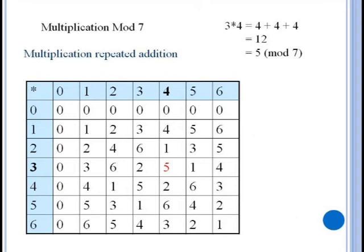And of course multiplication is repeated addition so either append multiple times or just do integer multiplication to find the remainder. For instance three times four equals twelve which is equivalent to five mod seven. The mod seven table for multiplication is shown here also.